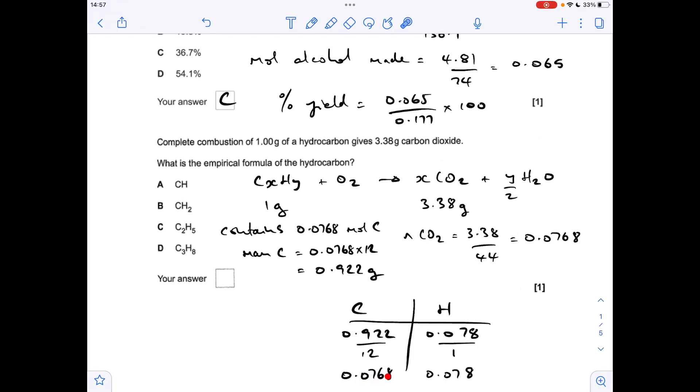Now we know the mass of each atom in the hydrocarbon, we can work out the moles. We already knew that the moles of carbon was 0.0768, and obviously the moles of hydrogen is its mass divided by one, which is thereabouts the same. That's telling us that the ratio between carbon and hydrogen must be one to one, and therefore the answer was A. Very well done if you got that one right because I think that's tricky.